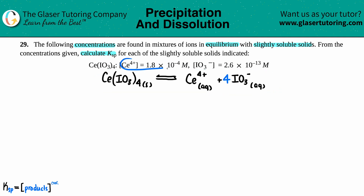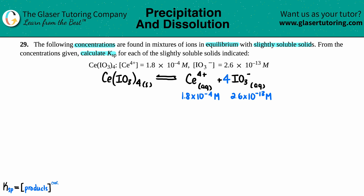They told us the Ce4+ concentration is 1.8 times 10 to the negative fourth molarity, and the IO3- concentration is 2.6 times 10 to the negative 13th molarity. Don't be scared by the 4. A lot of students would say, 'oh, I have four of these, I have to multiply this by 4.' Whatever concentration they gave you, that's what you have — no more, no less. The 4 is only used for ratio purposes in the balanced equation. If they give you a concentration, it applies to all of the IO3s collectively: 2.6 times 10 to the negative 13th molarity.